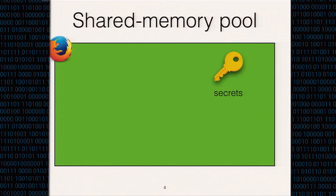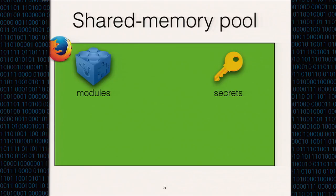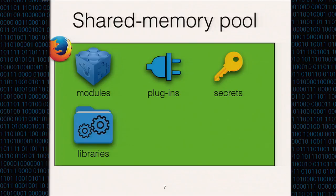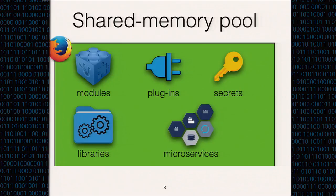Here we use a simple example to illustrate the isolation problem in a single process address space. Imagine the green box to be the address space of a Firefox web browser. Within its process address space, this Firefox instance stores program secrets such as users' passwords or credit card information, which shouldn't be accessed by other irrelevant software components. But the browser could allow modules, plug-ins, libraries, and microservices to enhance its functionalities, all sharing the same address space.